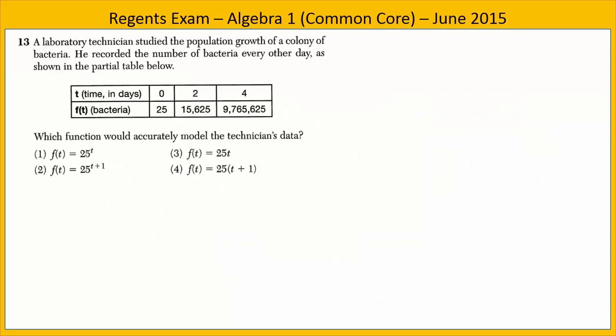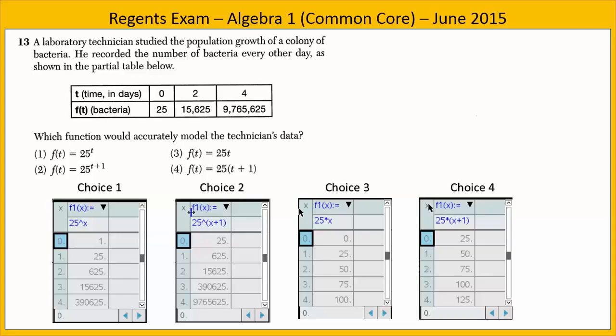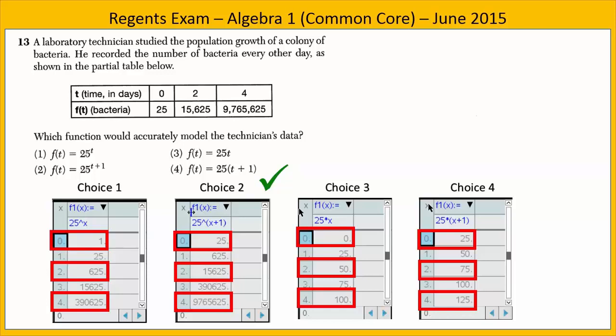In Problem 13, a laboratory technician is studying the population growth of a colony of bacteria. He records the number of bacteria every other day, where t is the time in days and f(t) is the number of bacteria. To find which function accurately models the data, put each equation into the graphing calculator and compare its table of values to the technician's table. The one with matching values at t equals 0, 2, and 4 is choice 2: f(t) = 25^(t+1). Choice 2 is our answer.